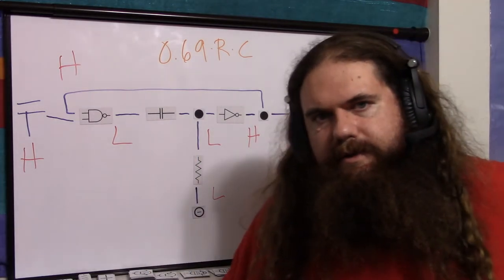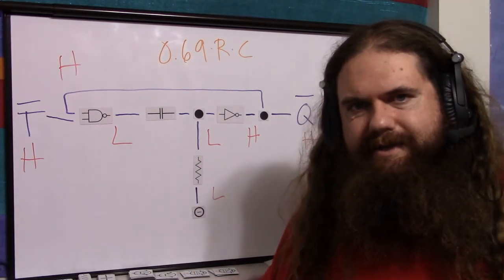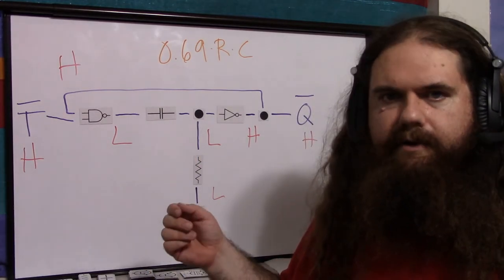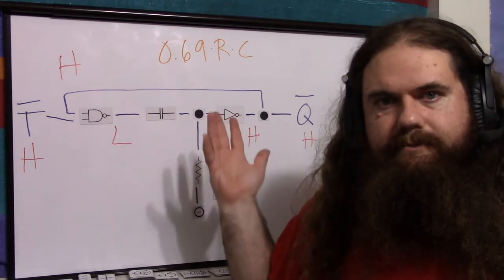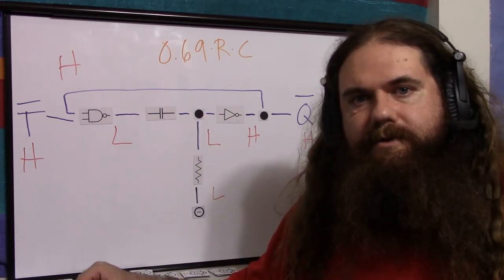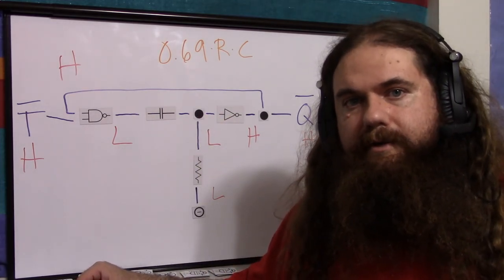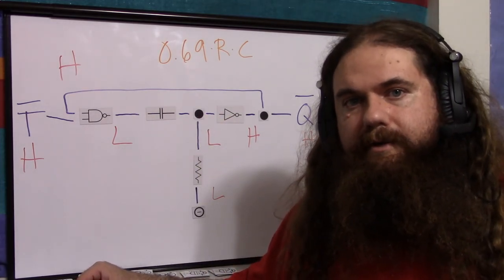So that's the CMOS NAND gate monostable that works as a falling clock signal pulse generator. I think it's a little cleaner than a delay gate — the delay gate is fine, but this is prettier. So while we both admire its beauty, I'll be seeing you.